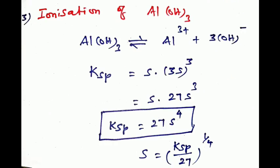Similarly, for a unitrivalent salt like Al(OH)₃: Al(OH)₃ ⇌ Al³⁺ + 3OH⁻. The solubility product Ksp equals [Al³⁺][OH⁻]³ = S × (3S)³ = S × 27S³ = 27S⁴. Therefore, solubility S equals (Ksp/27)^(1/4).